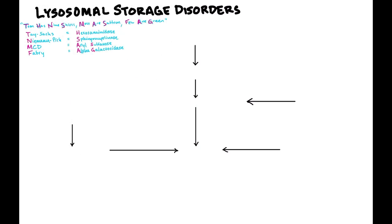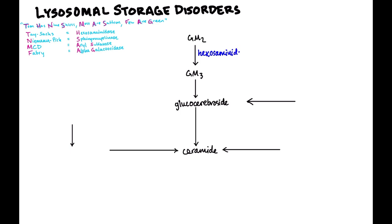All of these sphingolipids are going to converge on ceramide, and ceramide then gets broken down further. Our first path starts with GM2 ganglioside, which gets broken down into GM3 ganglioside. GM3 then gets broken down into glucocerebroside. The enzyme that takes you from GM2 to GM3 is called hexosaminidase — that's the first enzyme you need to know.